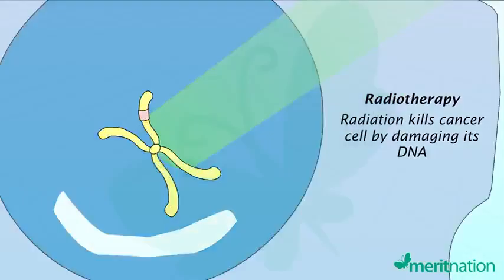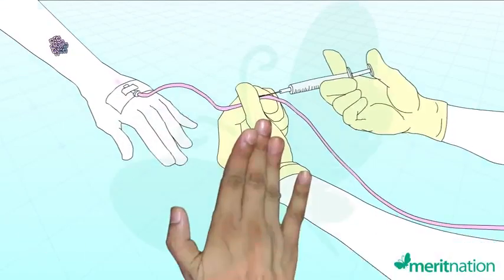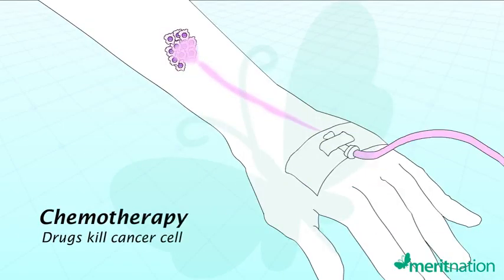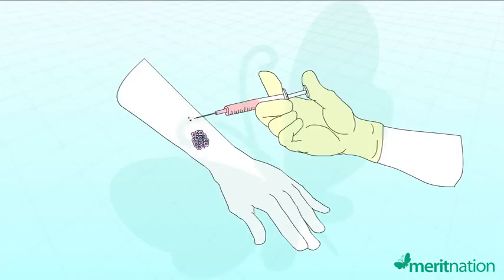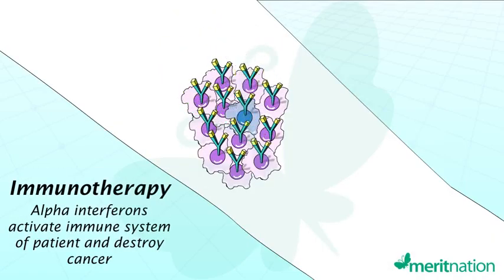The treatment of cancer involves radiotherapy, where tumor cells are irradiated to death; chemotherapy, where drugs specific for particular tumors are used to kill cancer cells; and immunotherapy, where biological response modifiers such as alpha interferons are used to activate the immune system of the patient and help in destroying the cancer.